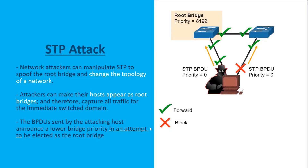Spanning Tree is a protocol that is on by default on our Cisco switches. Its job is to provide us redundant connections while maintaining loop-free pathways, and it does it great. But the problem is threat actors can utilize Spanning Tree to actually change the topology of your network infrastructure. The way they would do this — based on logical, not physical connections — is to make their host appear as a root bridge.